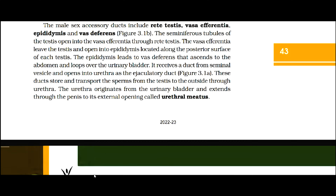The male sex accessory ducts include rete testis, vasa efferentia, epididymis, and vas deferens, as given in figure 3.1b. The seminiferous tubules of the testes open into the vasa efferentia through rete testis. The vasa efferentia leave the testes and open into the epididymis located along the posterior surface of each testis. The epididymis leads to vas deferens that ascends to the abdomen and loops over the urinary bladder. It receives a duct from the seminal vesicle and opens into the urethra as the ejaculatory duct, as given in figure 3.1a. These ducts store and transport the sperms from the testes to the outside through the urethra.